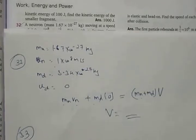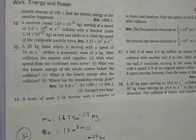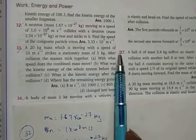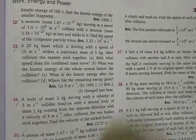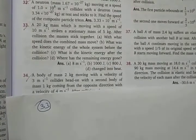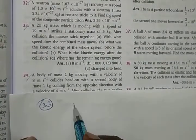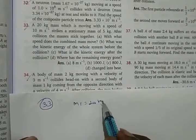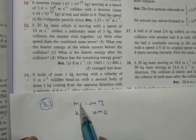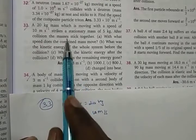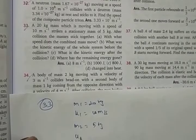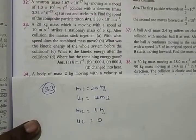Question number 33. A 20 kg mass moving with a speed of 10 m/s. So M1 = 20 kg, U1 = 10 m/s. It strikes a stationary mass M2 = 5 kg, so U2 = 0. After collision the masses stick together — M1 + M2 = 25 kg — and the combination moves.